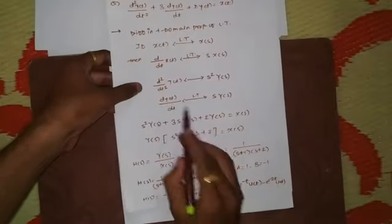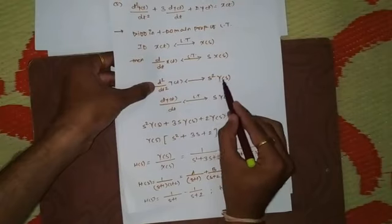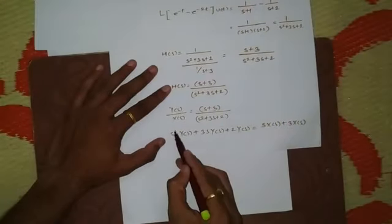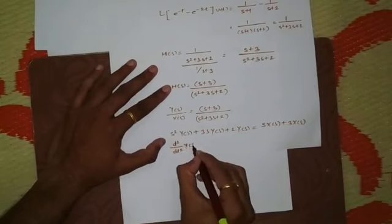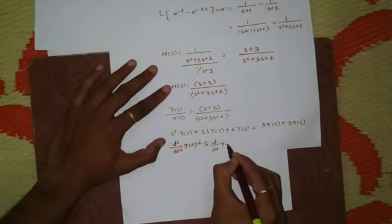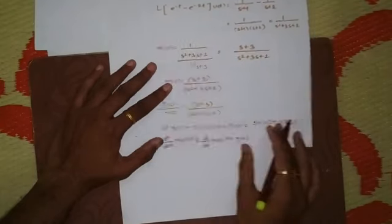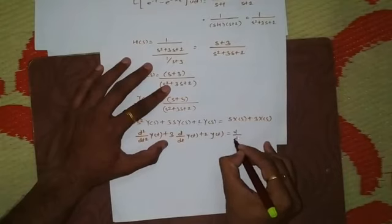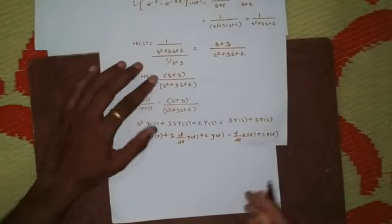Converting back to time domain: s²·Y(s) → d²y/dt², s·Y(s) → dy/dt, so we get d²y/dt² + 3·dy/dt + 2·y(t) = dx/dt + 3·x(t). This is the differential equation of the system.